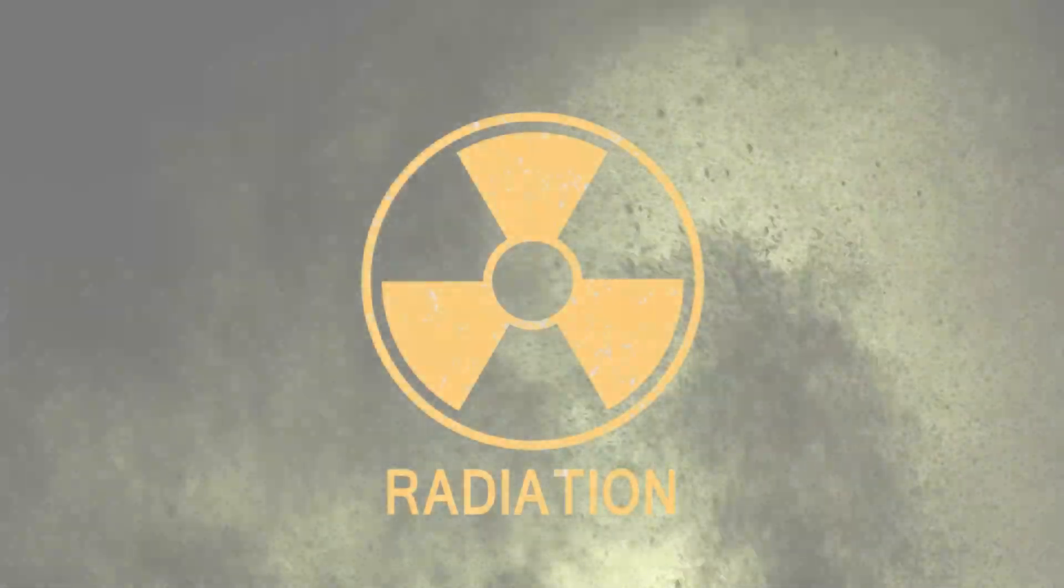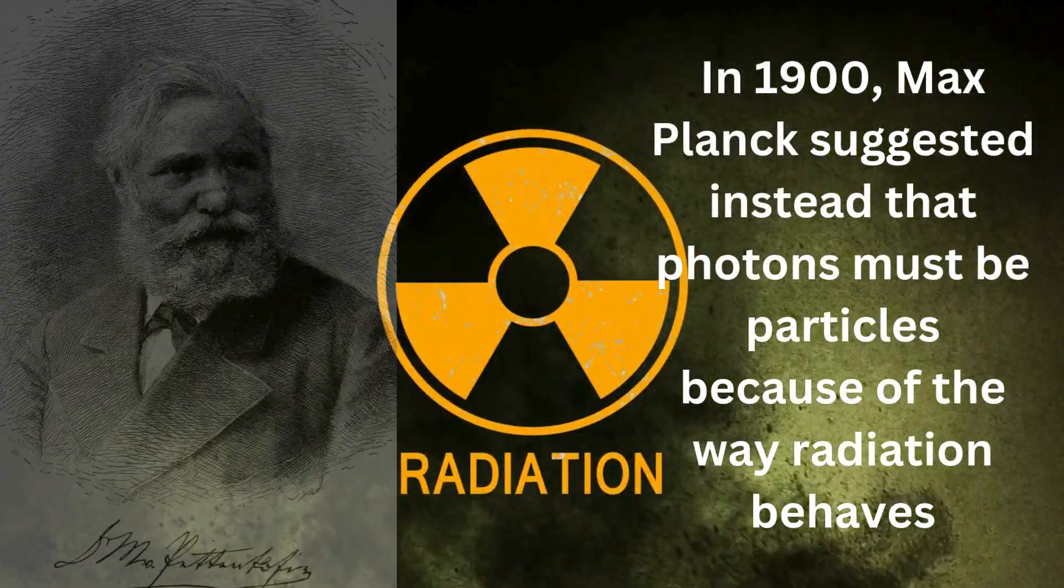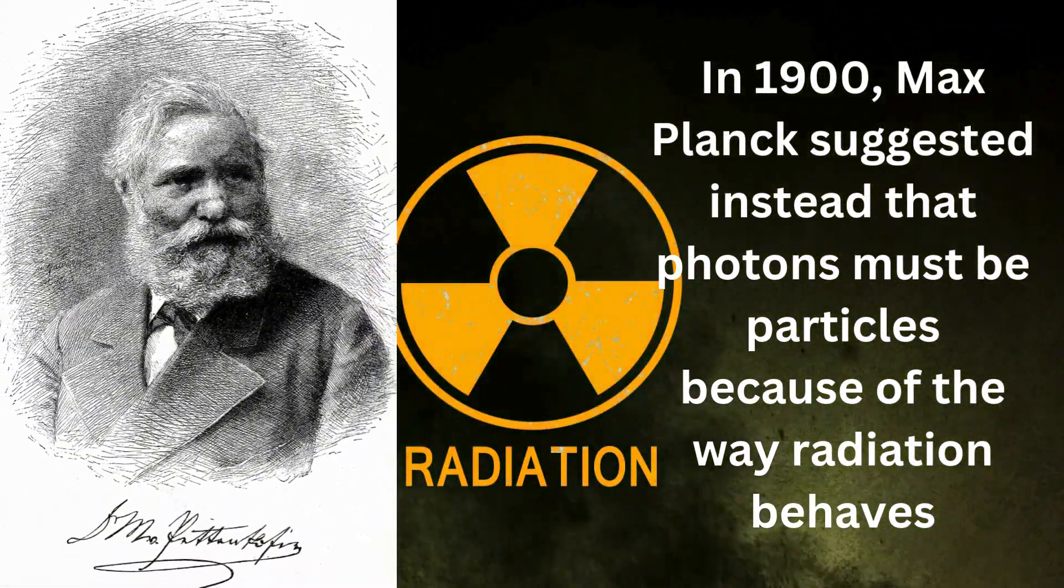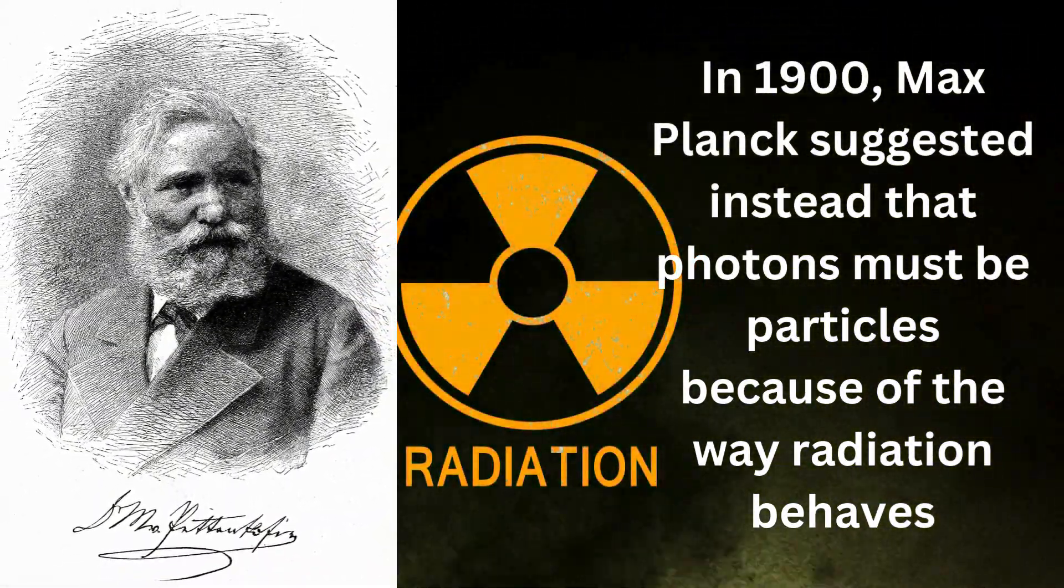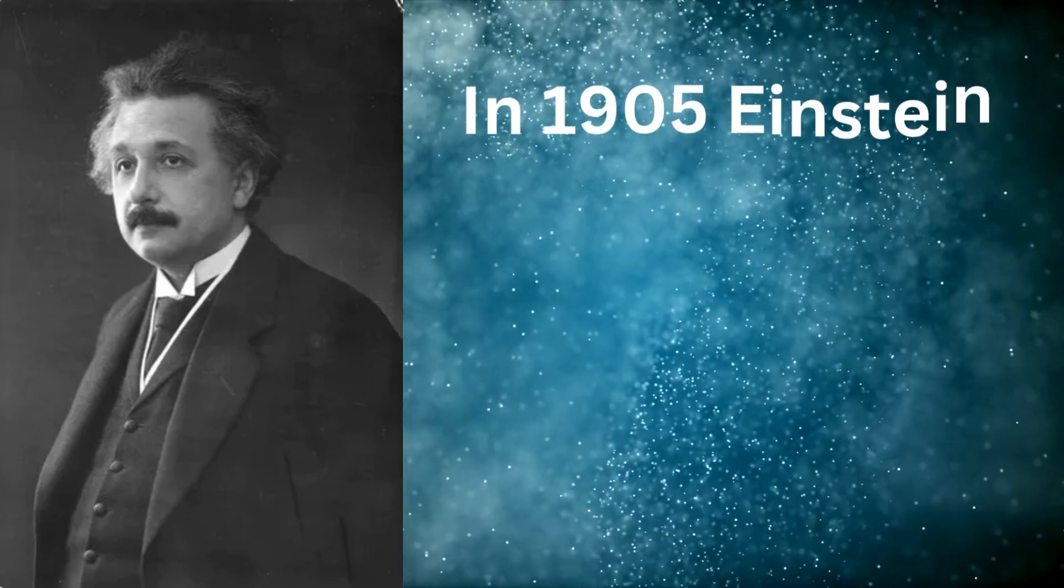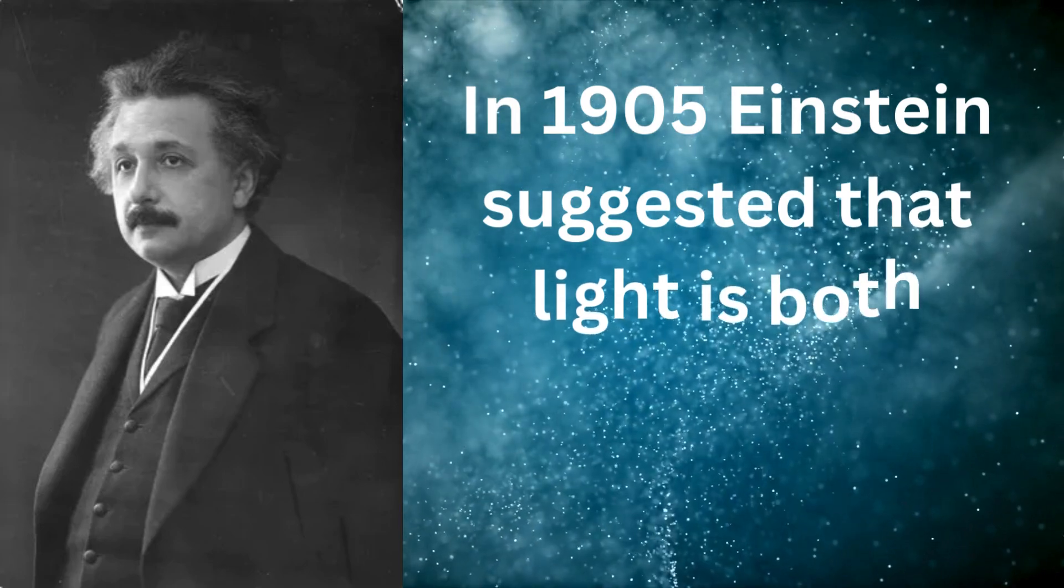Huygens' wave model gained additional support from experiments in the 1800s. In 1900s, Max Planck suggested instead that photons must be particles because of the way radiation behaves. This opened the door for Einstein to suggest in 1905 that light is both particles and waves.